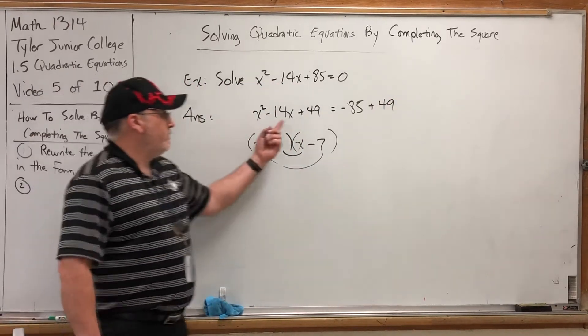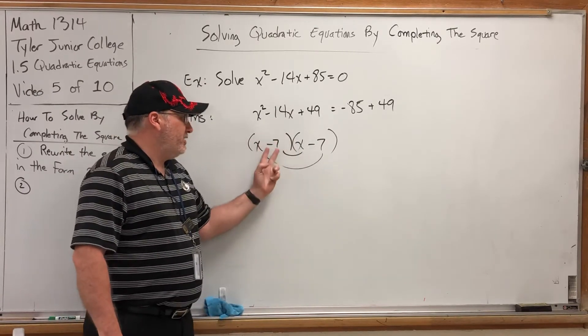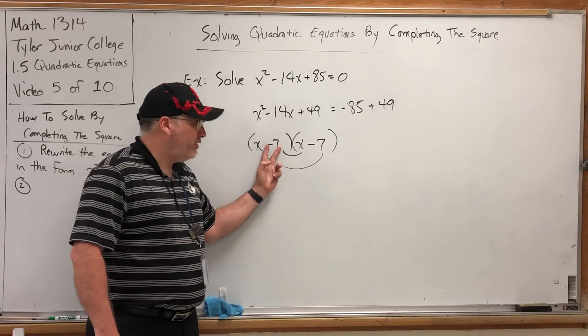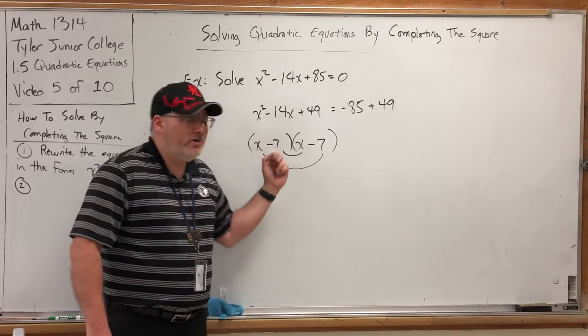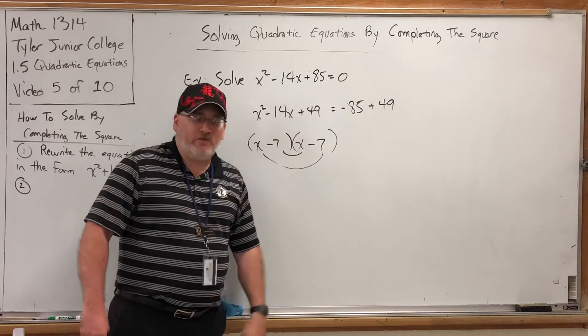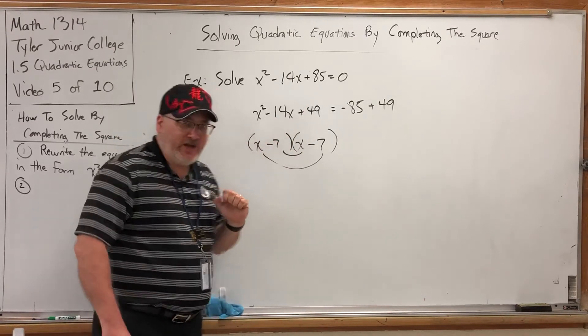Well, how did we get from the negative 14 to the 49? What did we do to the negative 14 to get negative 7? We took half of it. And what did we do with it once we took half of it? We basically squared it. Half of negative 14 is negative 7. Negative 7 squared is 49. So, we took half of this, squared it, and added it to both sides.